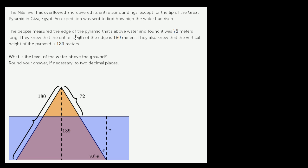The people measured the edge of the pyramid that's above the water and found it was 72 meters long. They knew that the entire length of the edge is 180 meters when it's not flooded. They also knew that the vertical height of the pyramid is 139 meters.